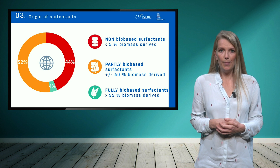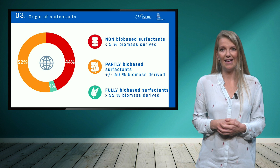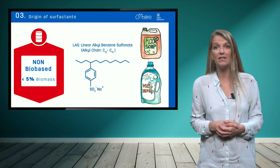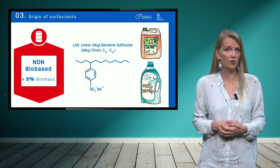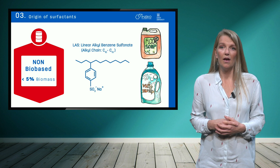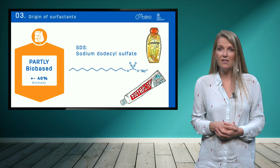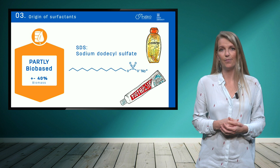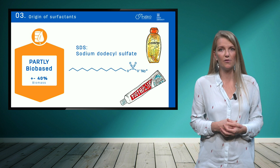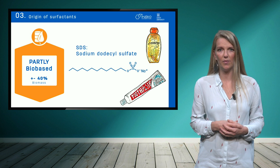An example of a non-biobased surfactant is LAS, mainly used in detergents and laundry detergents. An example of a partly-biobased surfactant is SDS, a widely applied surfactant you can find in toothpaste and shampoo or body wash.